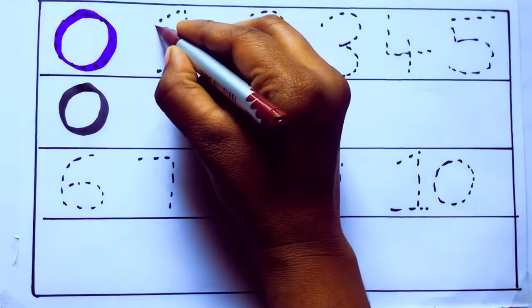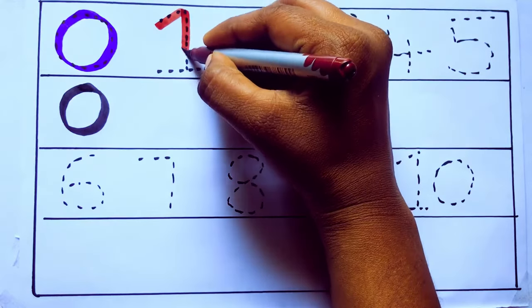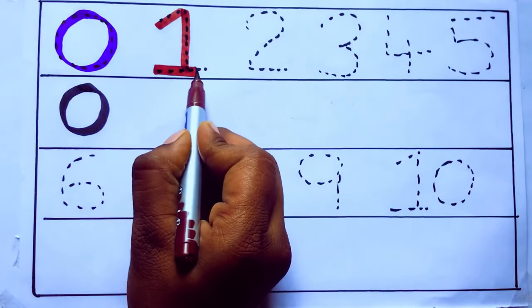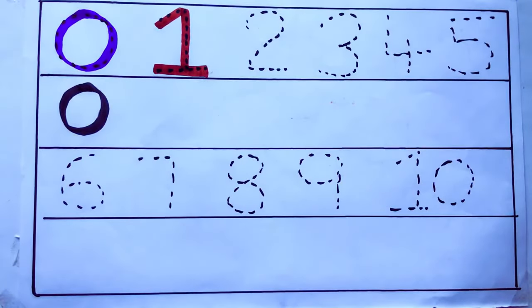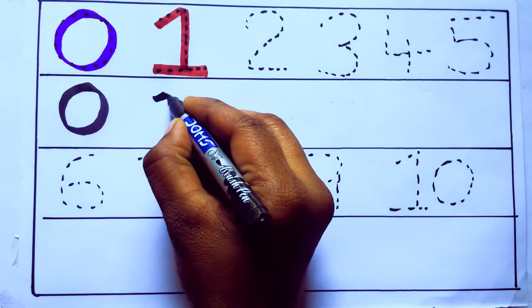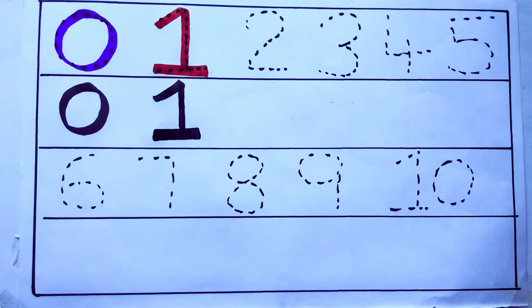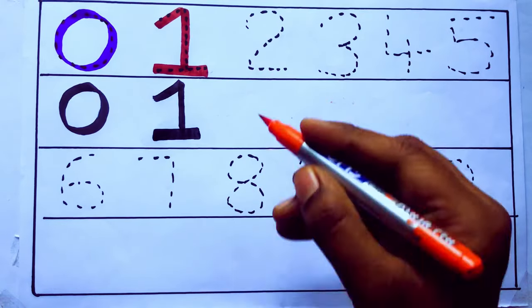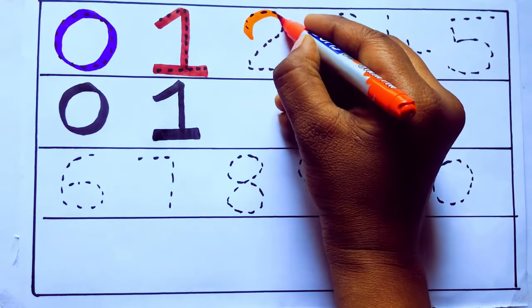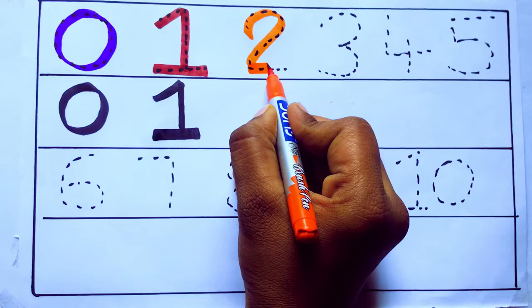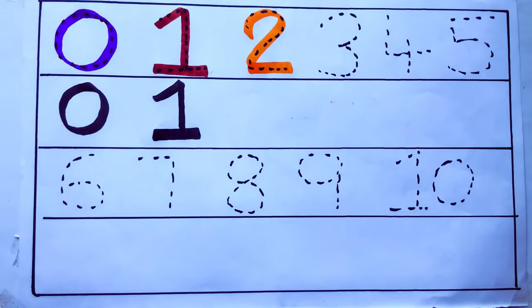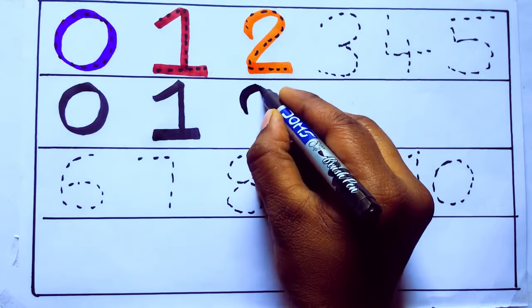Violet color, 0, Z-E-R-O, zero. Brown color, 1, O-N-E, one. Orange color, 2, T-W-O, two.